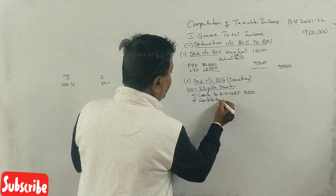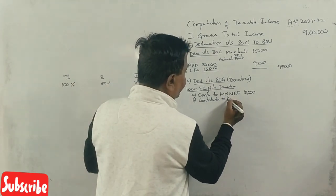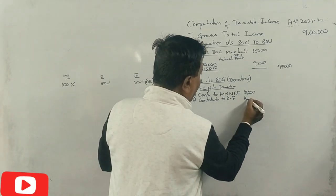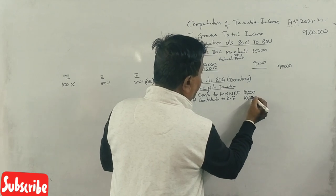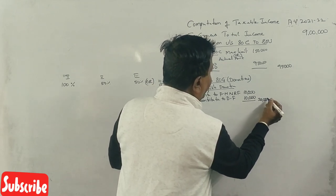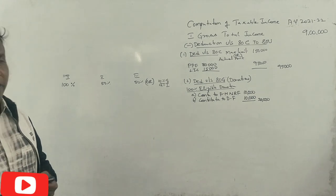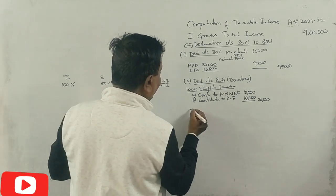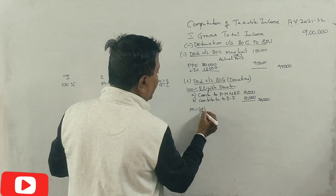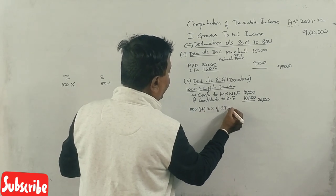Contribution to Defence Fund is 10,000 rupees — full amount qualifies for deduction. The second category is 50%, subject to 10% of gross total income.